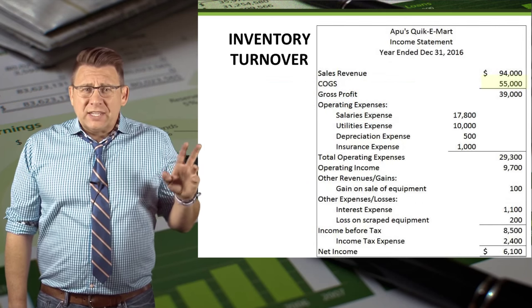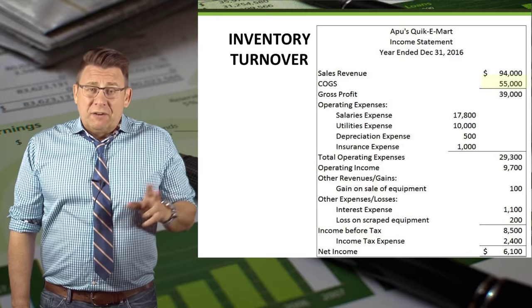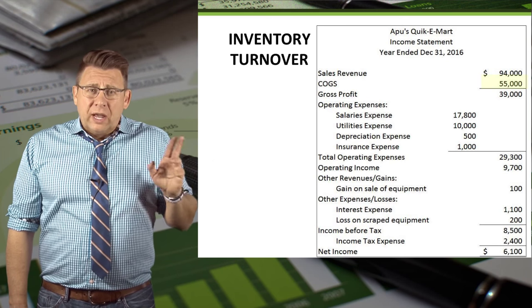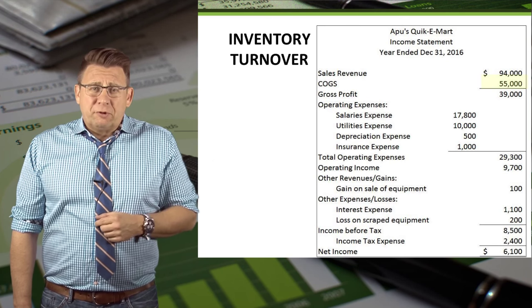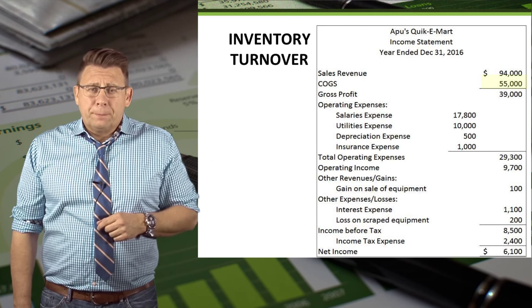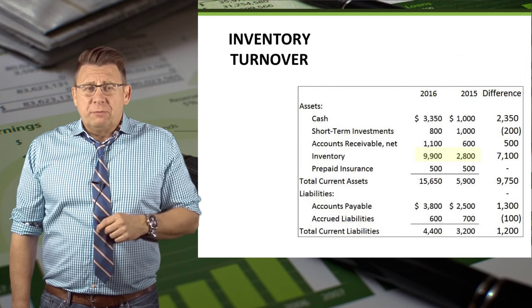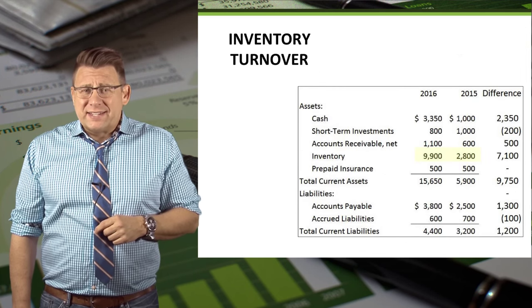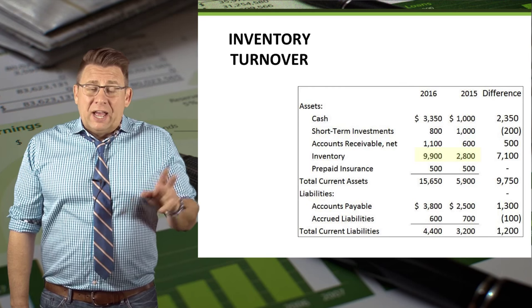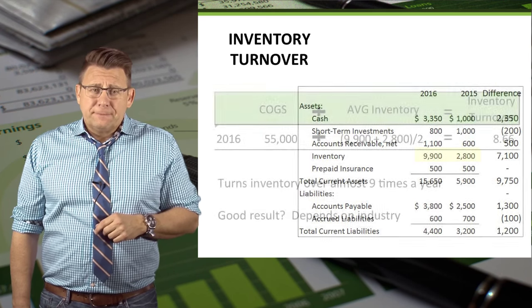Here is an income statement from a sample company. I've highlighted cost of goods sold and will use that information to determine the inventory turnover. Additionally, we need some information from the current asset section of a balance sheet. I've highlighted 2 years worth of inventory balances.